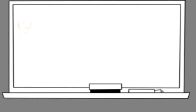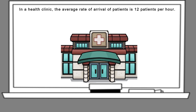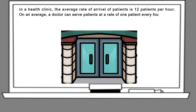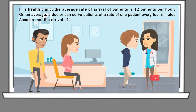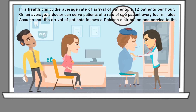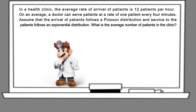Let us see an example that applies the queuing model. In a health clinic, the average rate of arrival of patients is 12 patients per hour. On average, a doctor can serve patients at a rate of 1 patient every 4 minutes. Assume that the arrival of patients follows a Poisson distribution, and service to the patients follows an exponential distribution. What is the average number of patients in the clinic?